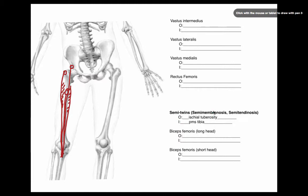Next we're going to look at the semi twins. They have the same origin and insertion, so I have it listed once. This consists of both the semimembranosus — a fleshy, thicker muscle — and the semitendinosus — a more tendinous muscle. Both are posterior and part of the hamstring group. Both are going to originate on the ischial tuberosity. Remember: Grace and Sarah and the semi twins all have PMS today — they all insert on the proximal medial surface of the tibia.